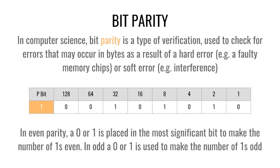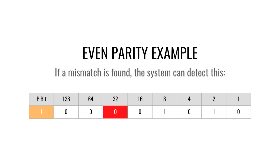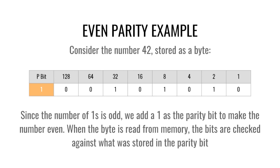Now let's talk about verification in computer science, starting with bit parity. Imagine an 8-bit number representing 42 — so the 32 bit, the 8 bit, and the 2 bit are on. We use even parity to verify this. We add a parity bit at the most significant (leftmost) bit position. With even parity, we want the total number of ones to be even. The number 42 has three ones, so we add a parity bit of 1 to make it even. If the ones were already even, the parity bit would be 0.